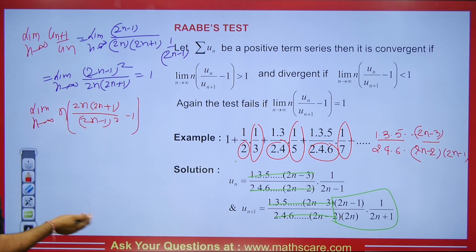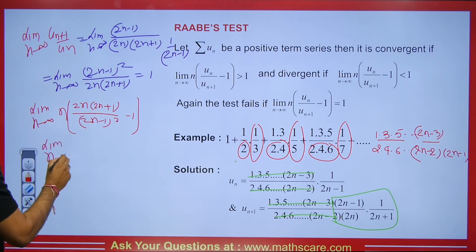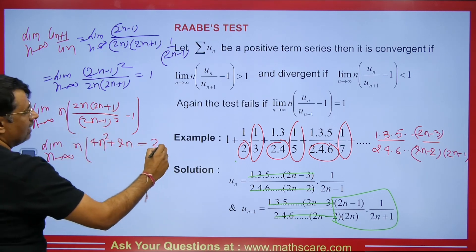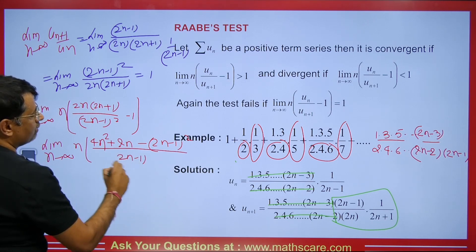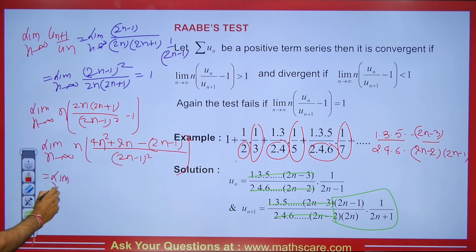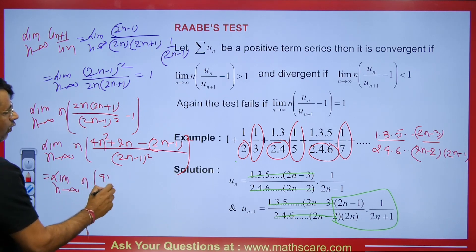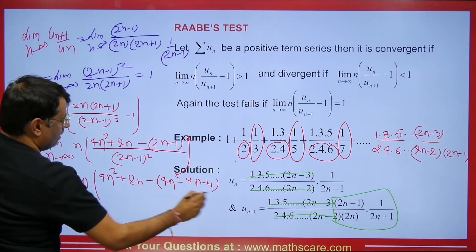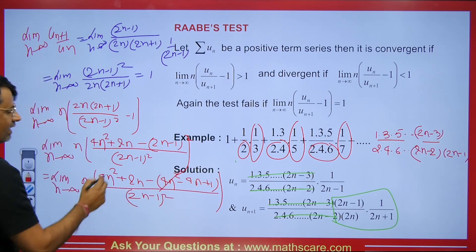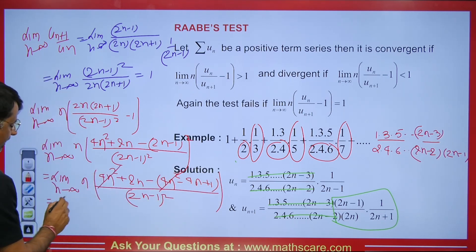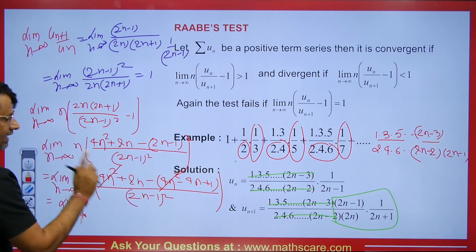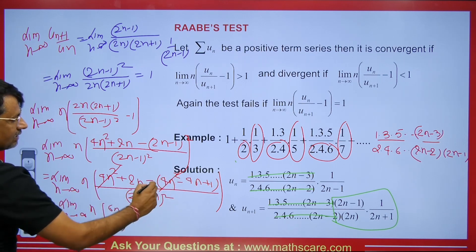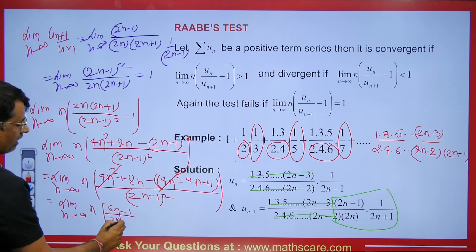After expanding, we get 4n² + 2n in the numerator (from n times 2n(2n+1)) and (2n−1)² = 4n² − 4n + 1 in the denominator. Taking the LCM: 4n² + 2n − (4n² − 4n + 1) = 6n − 1 in the numerator. The highest degree terms cancel — which is a good sign.